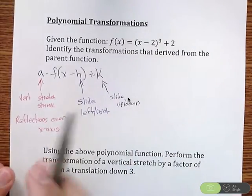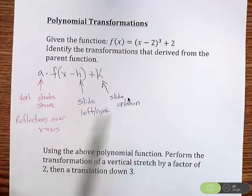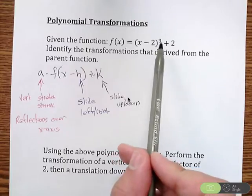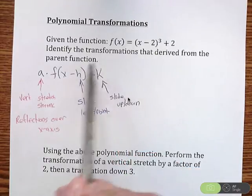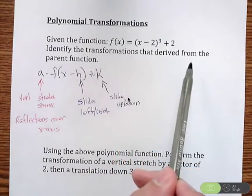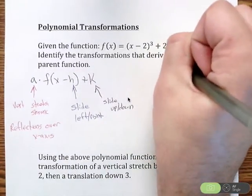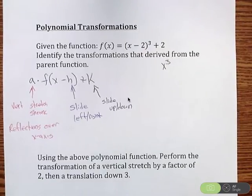So vertical stretch, shrink, slide left, right, slide up, down, and don't forget the reflection part. So in our first example, we're given the function f of x equals x minus 2 cubed plus 2. So we're going to identify the transformations that derive from the parent function. So the parent function here would have been just x cubed. So we have to come up with what new pieces happened.